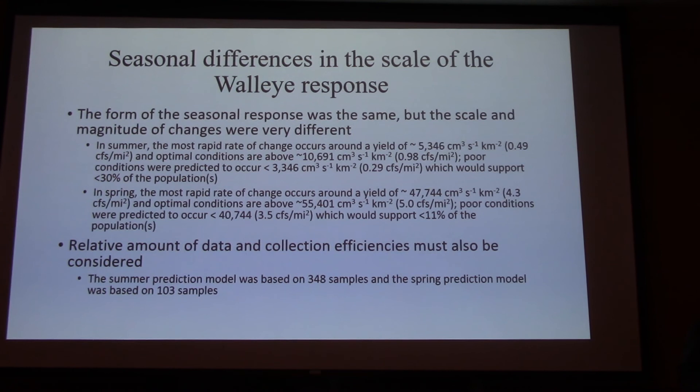Keep an eye on the blue line and see it go up and down as we go to the different scenarios. Okay, so with regard to walleye, by using these models and it was actually pretty fast to get some of these quantities, we were able to determine that in the summer, the most rapid rate of change in large warm rivers for walleye populations occurs at about a half a CFS per square meter.